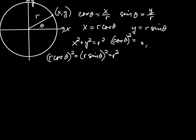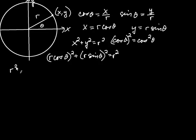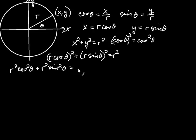The conventional way to write the square of cosine is cosine squared theta. So expanding gives r²·cosine²θ + r²·sine²θ = r². Factoring out r², we get r²(cosine²θ + sine²θ) = r².